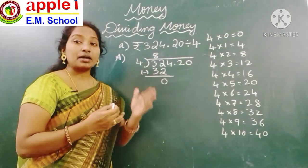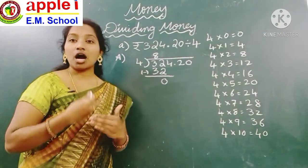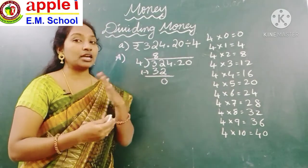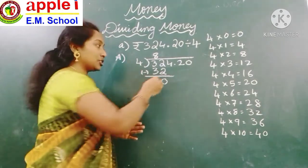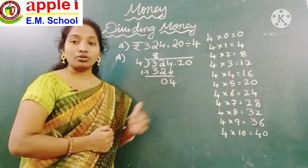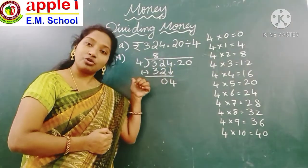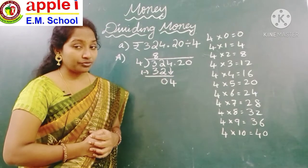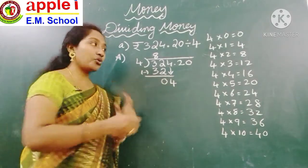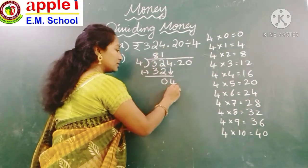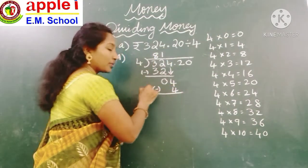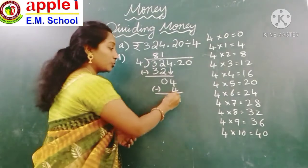The next step: bring down the next digit. Bring down 4. Now check the 4 times table — when do you get 4? 4 ones are 4. Next do the subtraction: 4 minus 4 is 0.